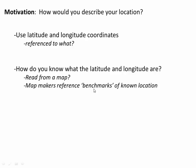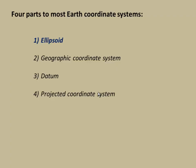In this video we'll go through how the lat/long grid is established, what the role of benchmarks is, and how coordinate systems have changed over time. Most coordinate systems have four parts: an ellipsoid, a geographic coordinate system, a datum, and sometimes a projected coordinate system. We'll look at each of these in turn.